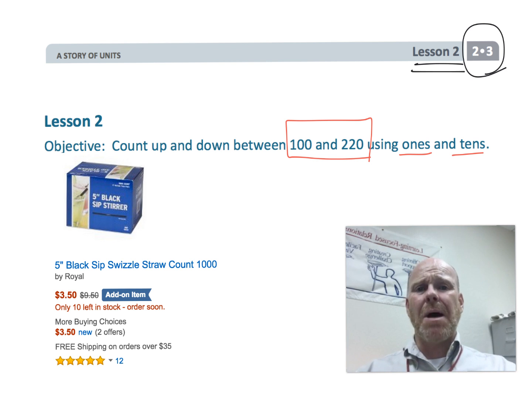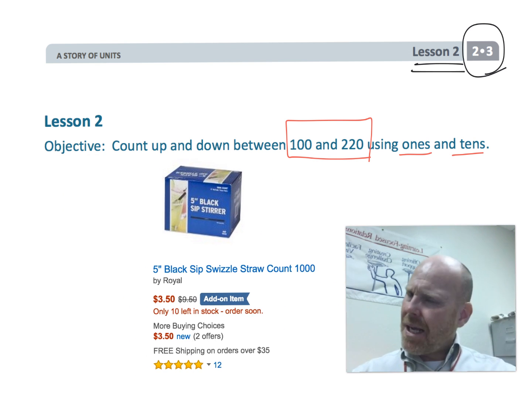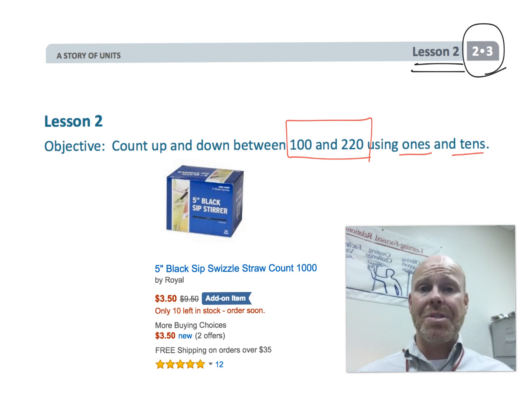In the last video I talked about popsicle sticks, pretty darn cheap. Here's another example, you can see you get those little coffee stirrers. Again this is an Amazon Prime special, $3.50 and you get a thousand of them. What's really cool about these is they're straws, they're plastic so they're cheap, but they're flat so they don't roll off the table.